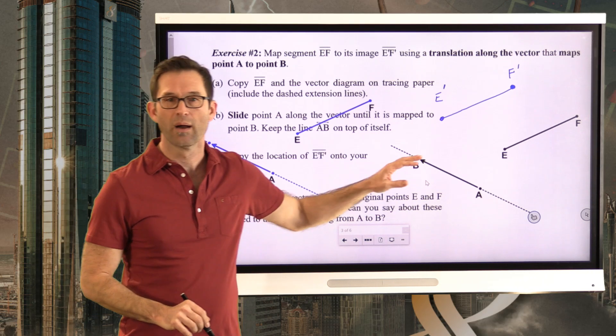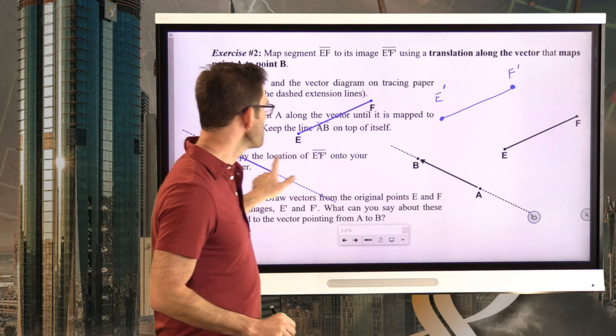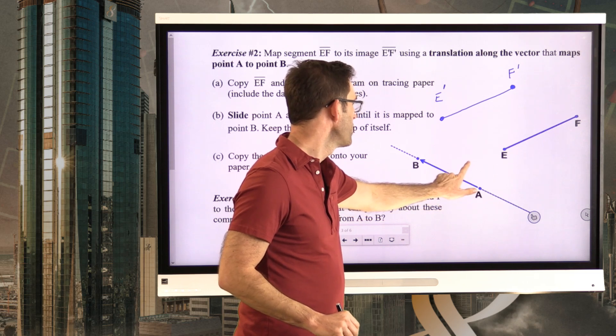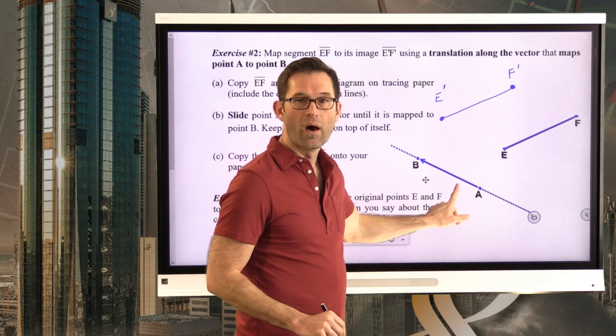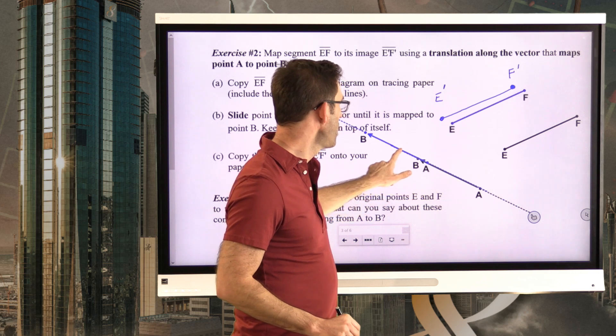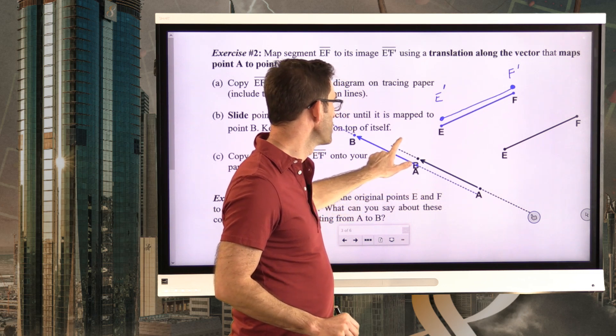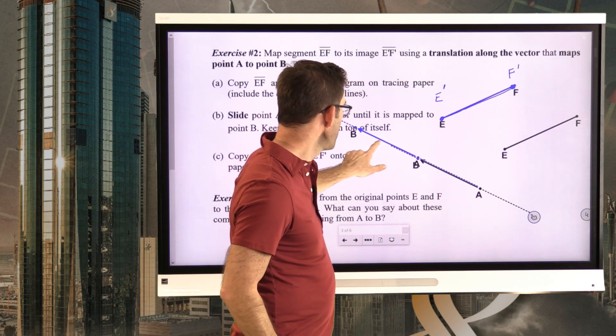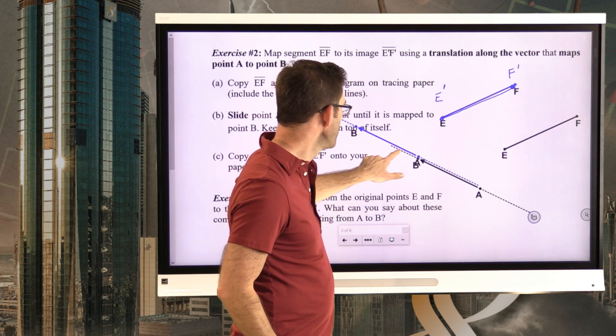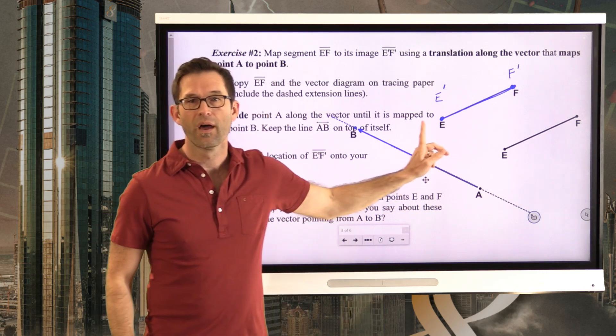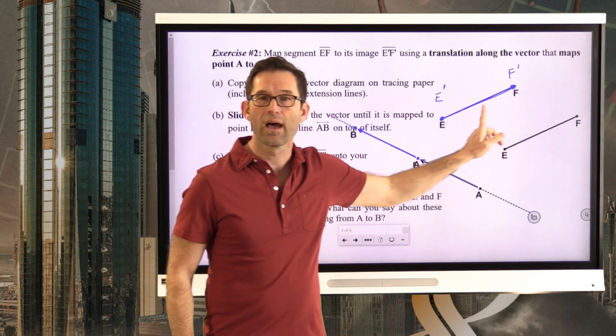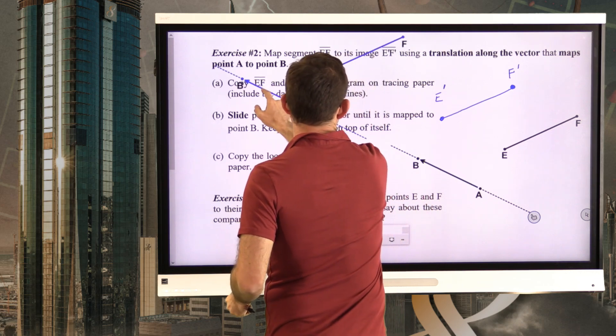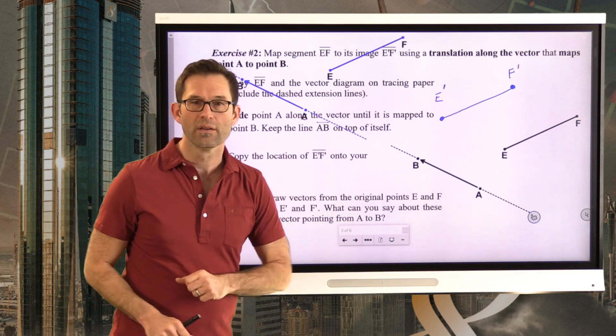And now I can put E prime F prime. Not maybe the most beautiful job because again I'm not using a straight edge, but that is absolutely it. So I've got this thing here originally, or I'm trying to get it there originally. I now just slide this along because the whole point is that a vector is along a straight line path. I then trace this out and that's now my image of EF after a translation along the vector AB. And we've already done letter C.